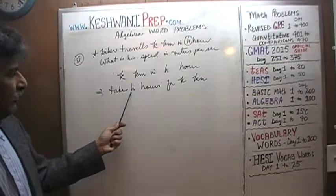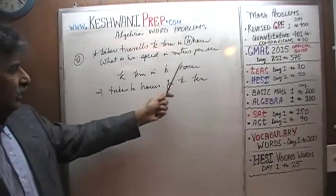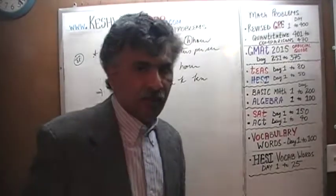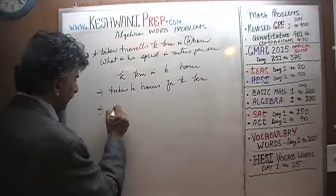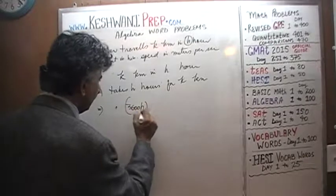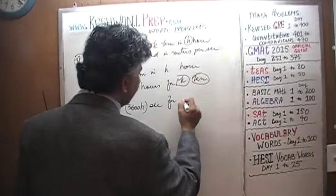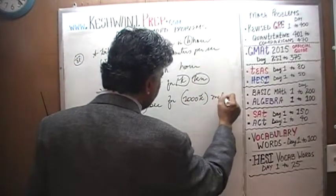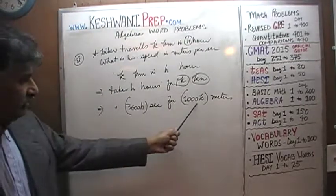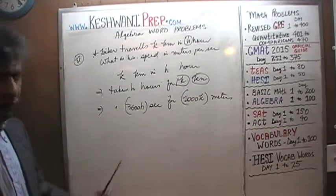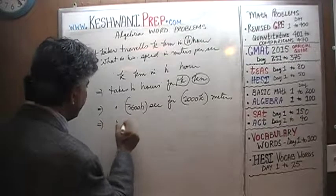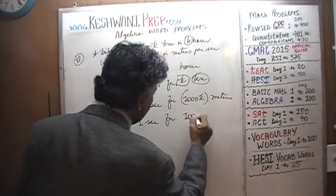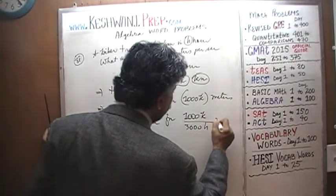All we have to do now is a two-step unit conversion: convert hours into seconds and kilometers into meters. How many seconds in an hour? An hour has 60 minutes and each minute has 60 seconds — 60 times 60 is 3600. So h hours translates into 3600h seconds for k kilometers. And k kilometers is the same as 1000k meters, because there are 1000 meters in a kilometer. So he takes 3600h seconds for 1000k meters, which means he covers 1000k over 3600h meters per second.